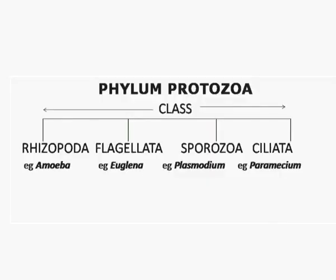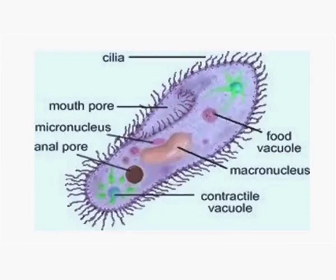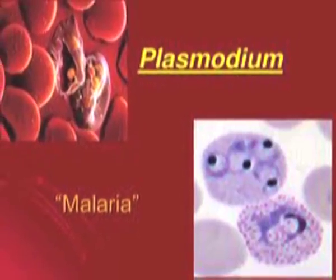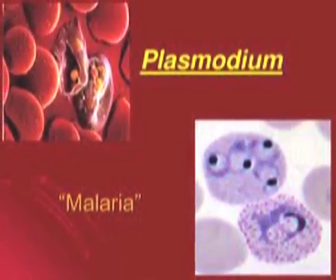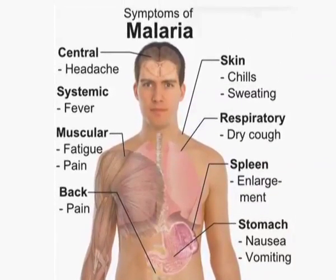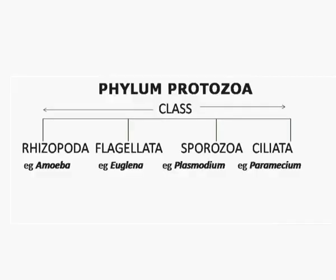Phylum Protozoa also includes Class Ciliata, which moves about with the help of cilia — for example, Paramecium. One example we are all aware of is Plasmodium. Since they live in the body of the host and do not move about, they are grouped under group Sporozoa.